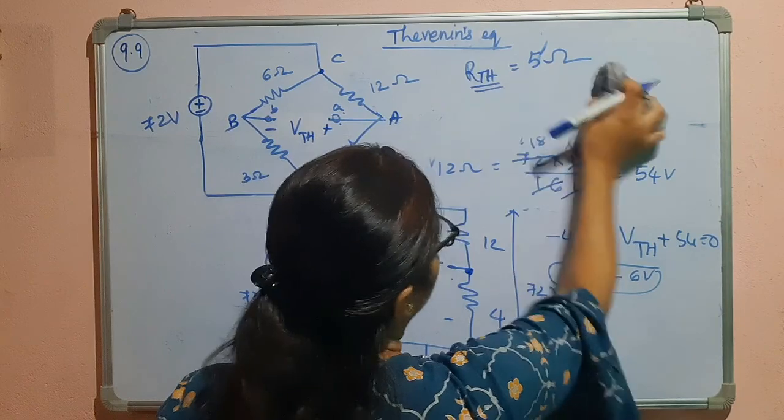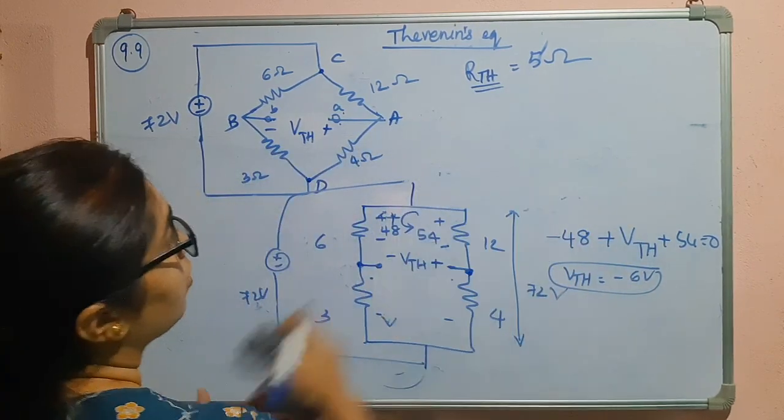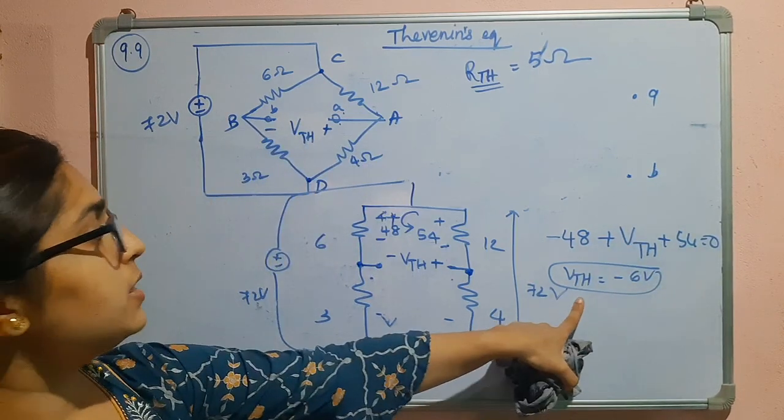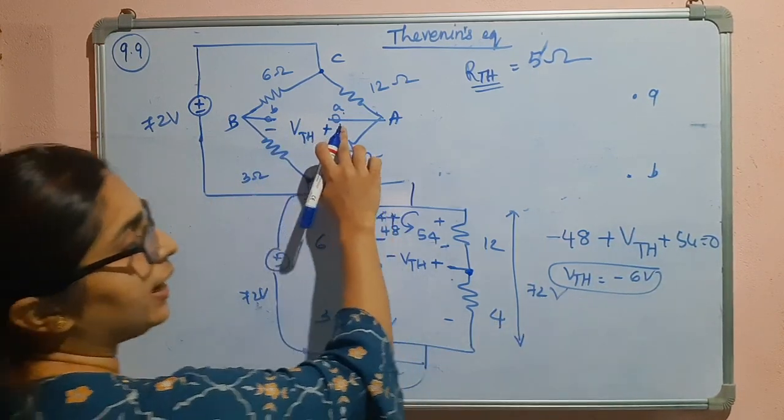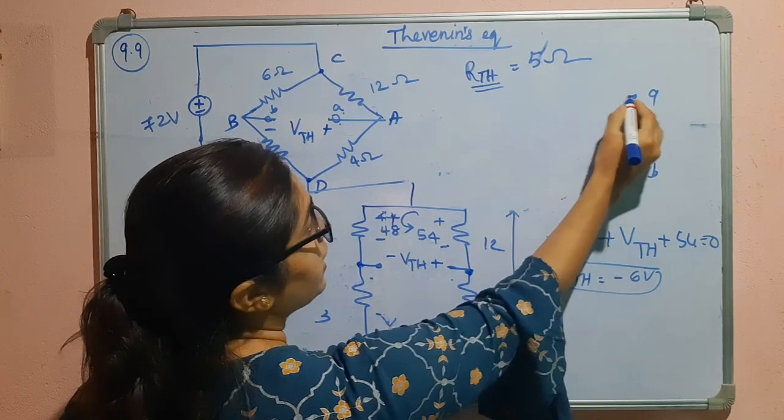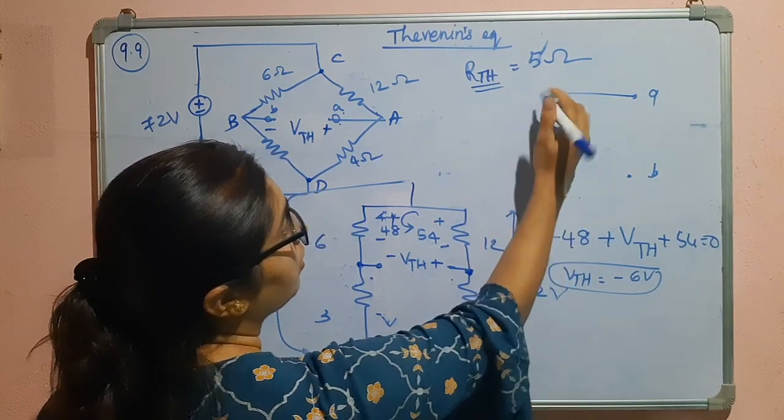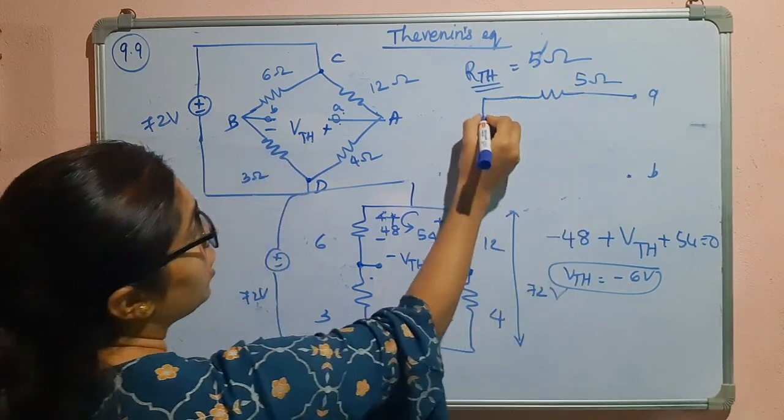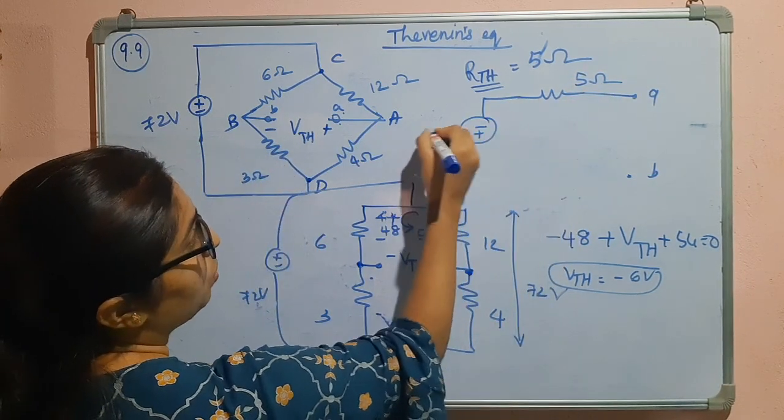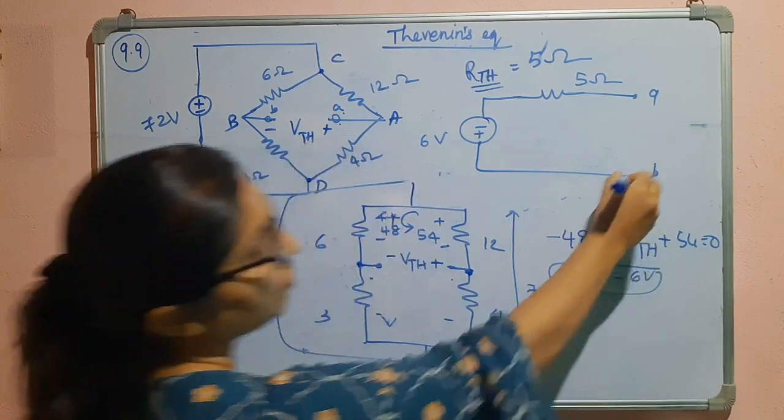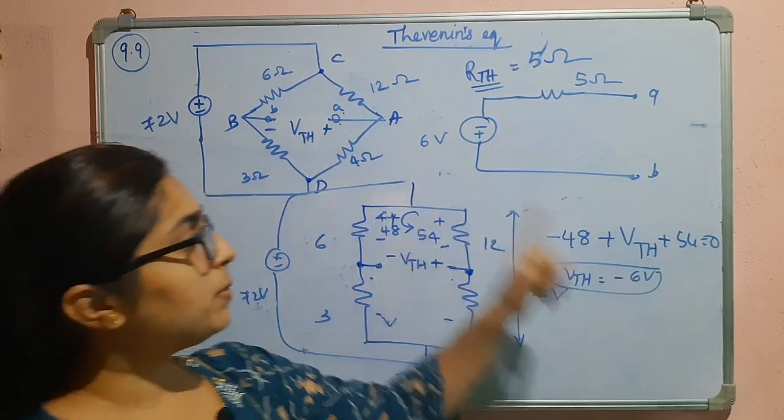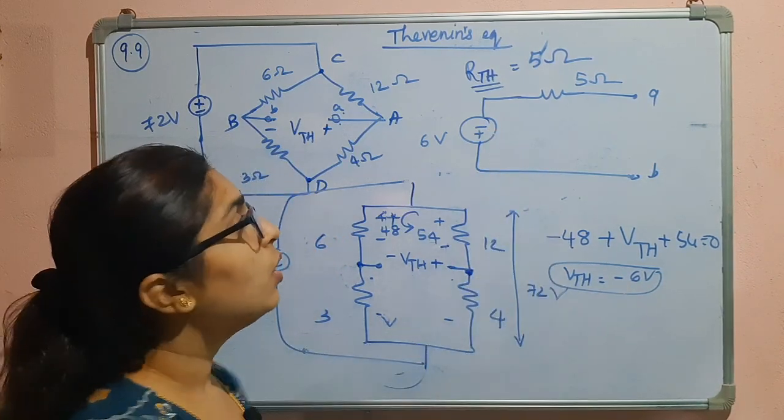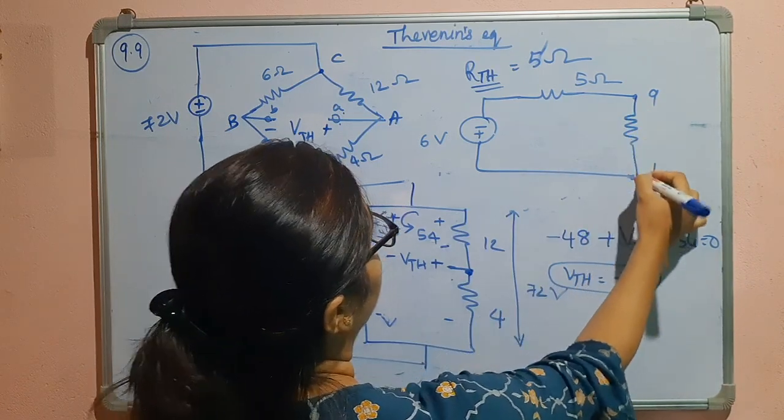So to write down the Thevenin's equivalent, this is A and B. VTH is minus 6 volts. That means A is at negative potential. So this is RTH. Here we can take it as 6 volts, that means minus 6 volts. Since minus is there I am taking minus first, plus next. So this is the Thevenin's equivalent.